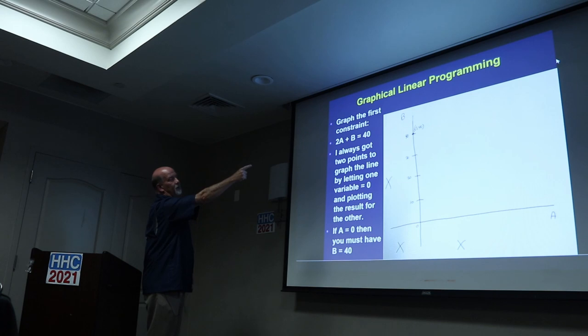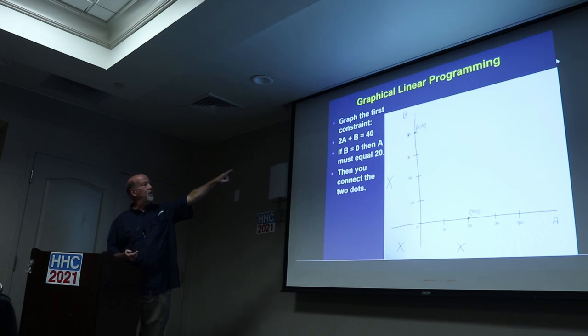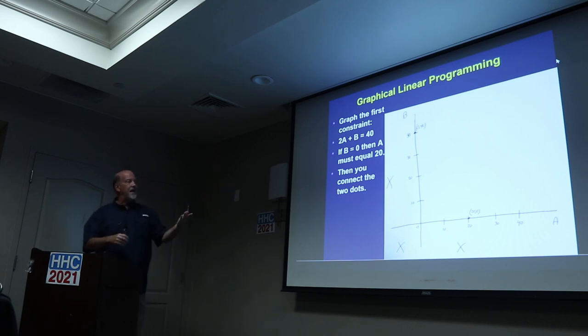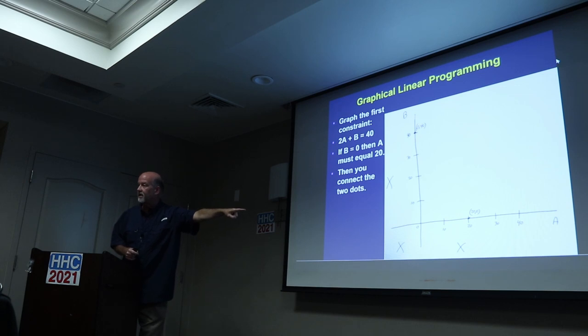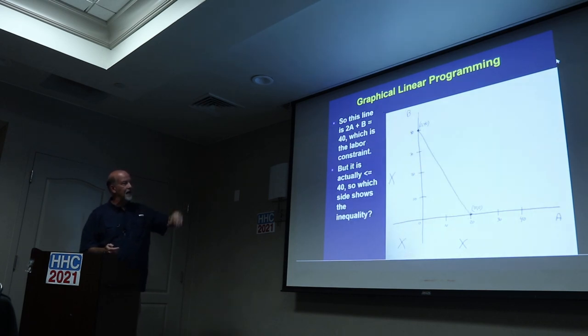So graph the first constraint. The first constraint is 2A plus B less than or equal to 40, but the way we do it is we graph the line. Don't worry about the inequality yet. If you have zero A, what's B? It's got to be 40. So that's the point up there, zero comma 40. You put in a zero for B and solve for A. If you put B equal to zero, then A has to be equal to 20. So that's 20 comma zero. The line is simply connecting the dots. Now that's where it's equal to 40. The inequality says it's got to be less than that. So it's got to be inside that part of the triangle.